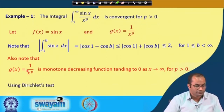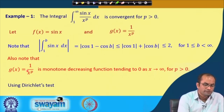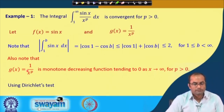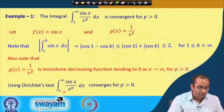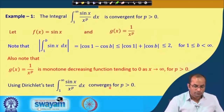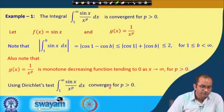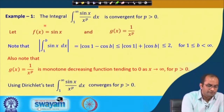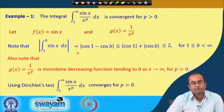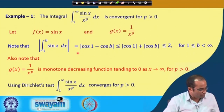Using the Dirichlet test now: the integral of sin(x) from 1 to b is uniformly bounded, and g(x) = 1/x^p is monotonically decreasing to 0 as x approaches infinity for any positive p. Therefore, we can conclude that the integral from 1 to infinity of sin(x)/x^p dx converges for any p greater than 0.